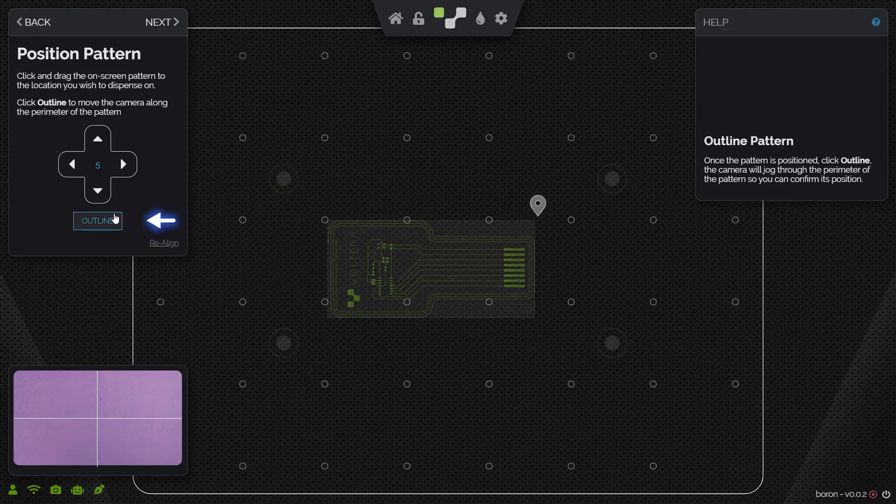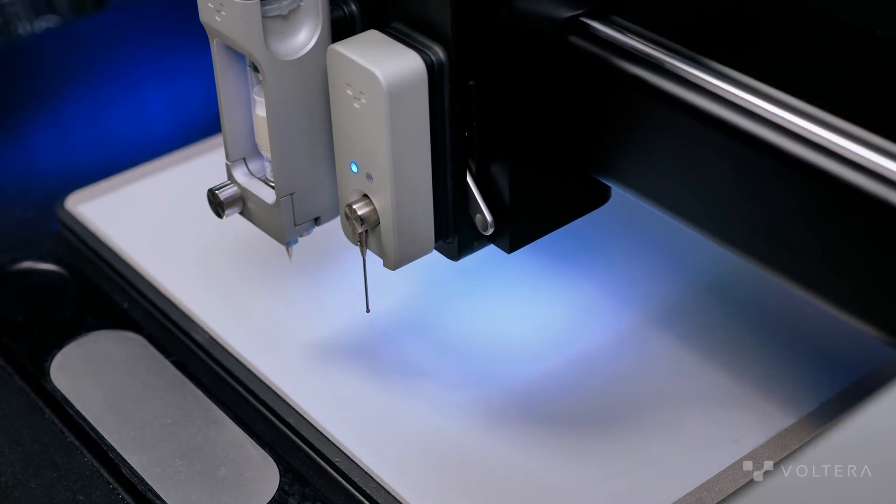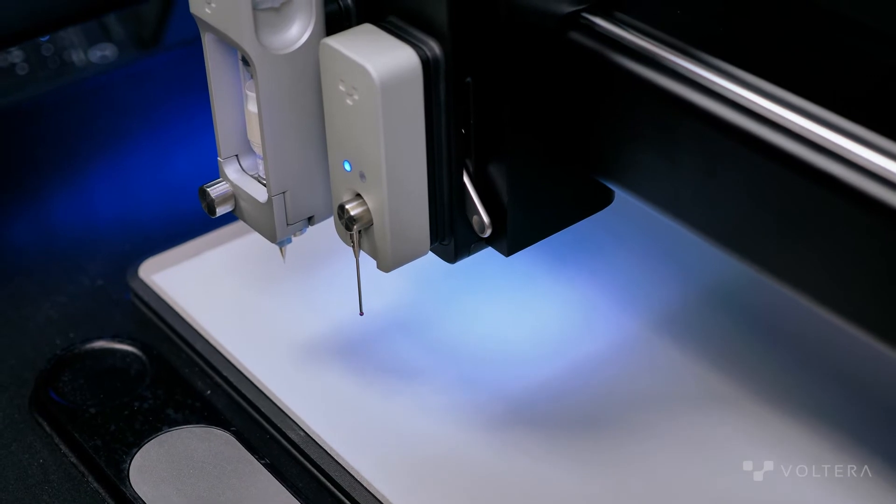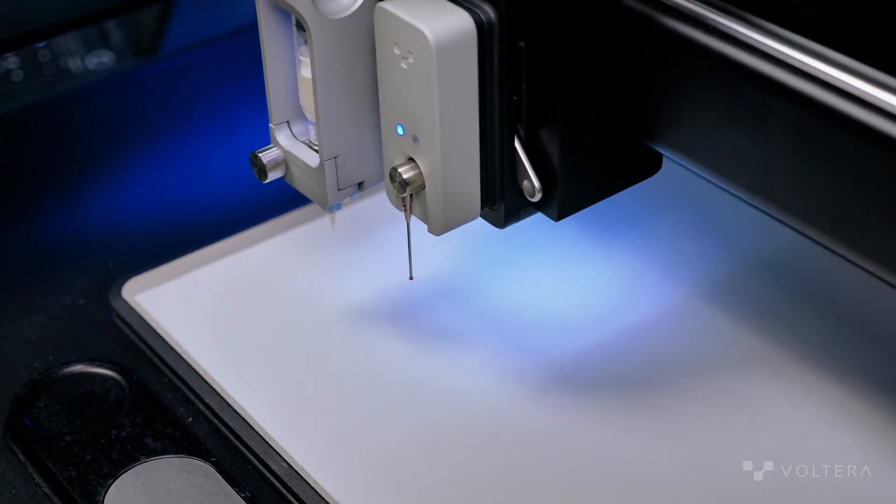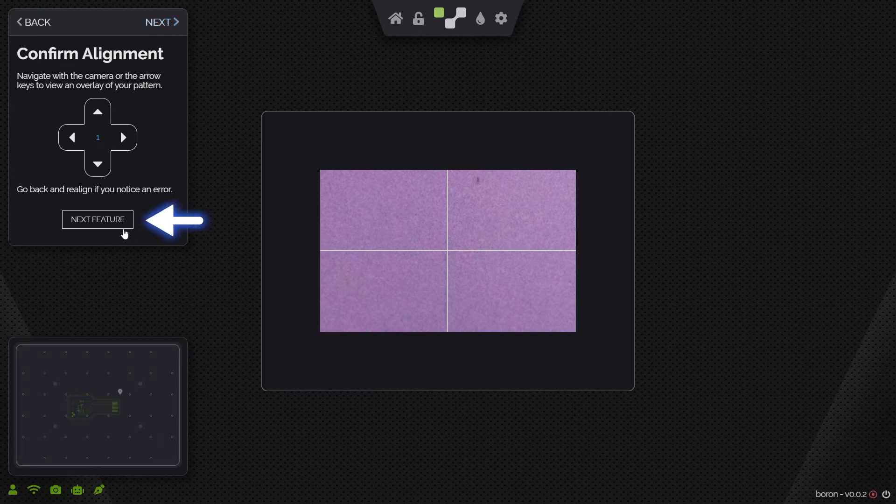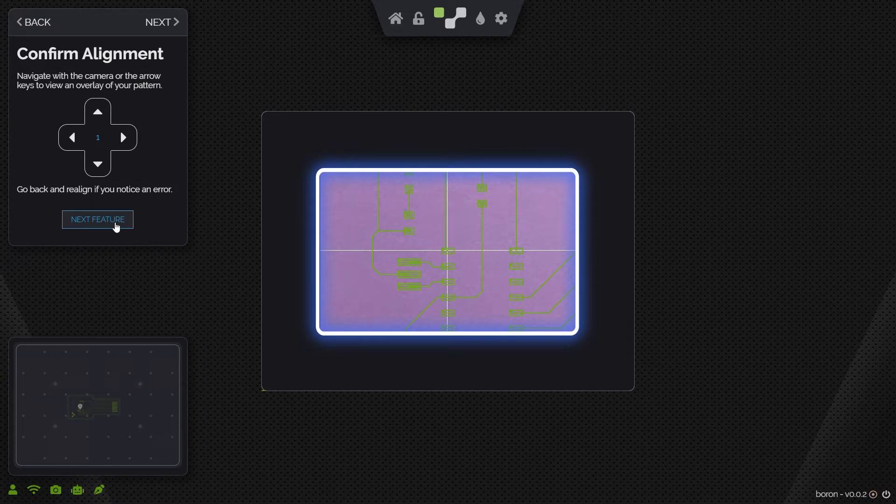When we click outline, NOVA will scan the perimeter of the print area with the onboard camera. Now we can confirm the alignment of the pattern on our substrate, and this is where the AR overlay kicks in. As I hit next feature, you'll actually be able to see the toolpath show up on the screen overlaid onto a live camera feed.